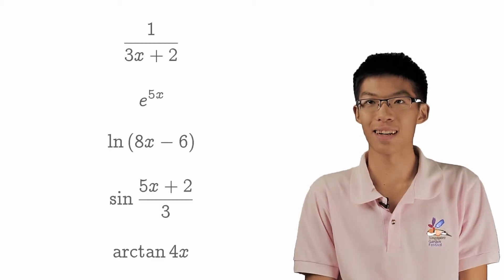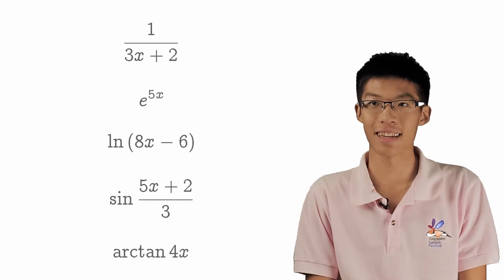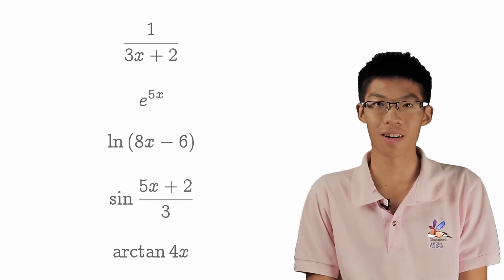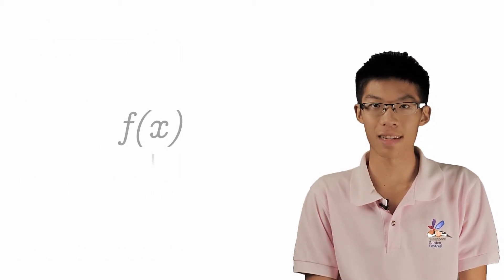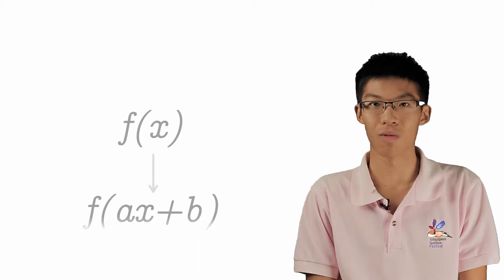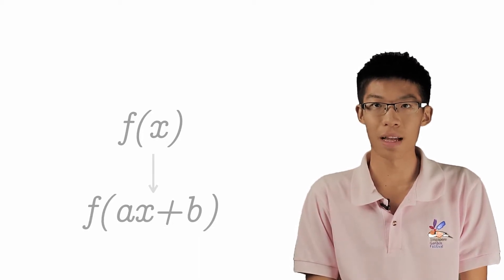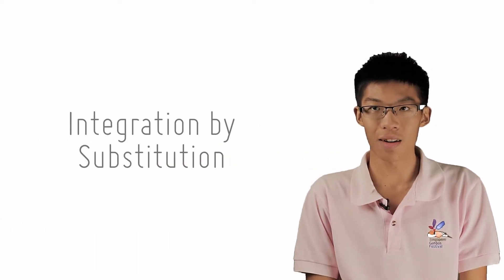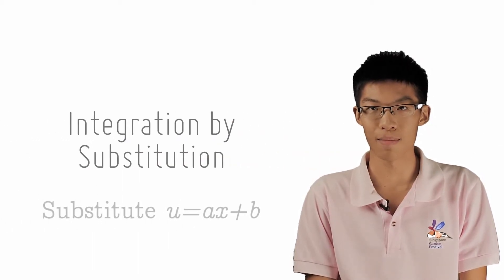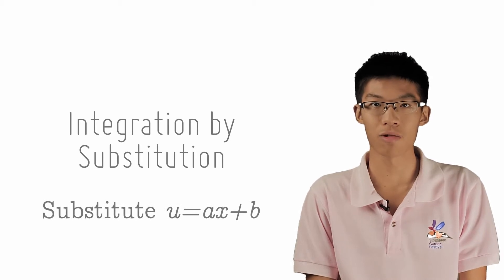In the previous lecture, I posed a question asking what these 5 functions all have in common. These functions are basically elementary functions f with x replaced by ax. You know how to integrate f, but now you have f of ax. For these kind of functions, you use the integration by substitution method, substituting u equals ax.